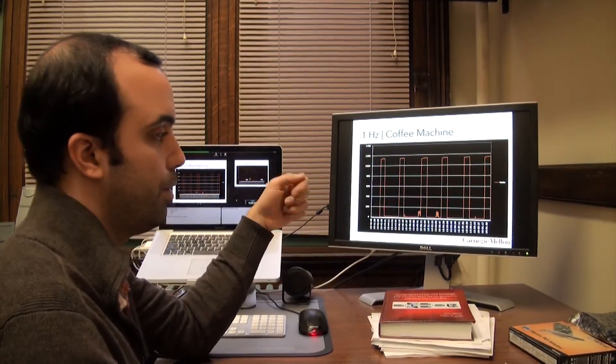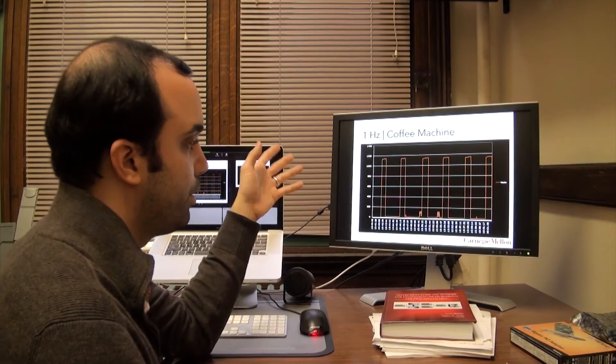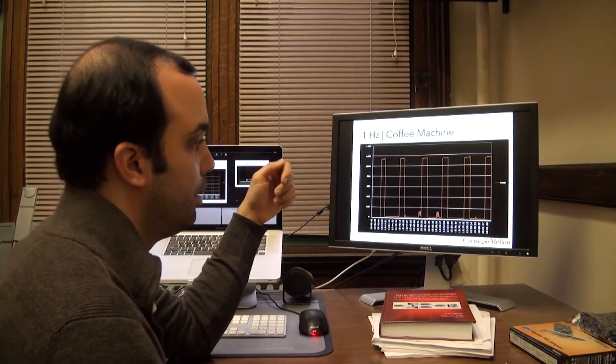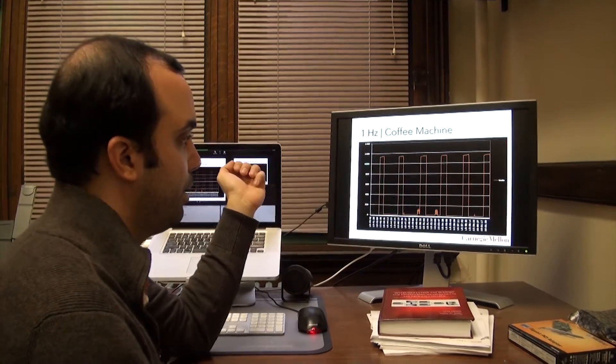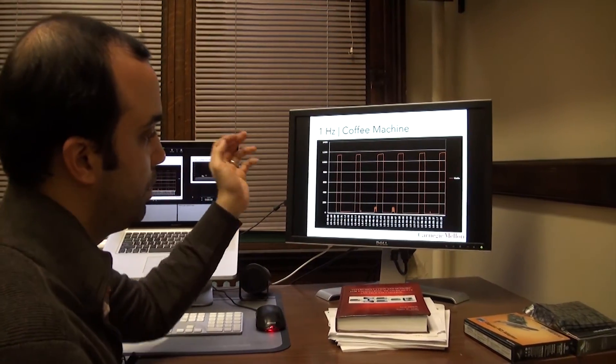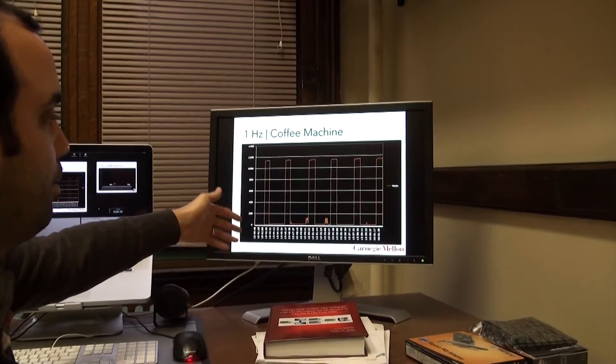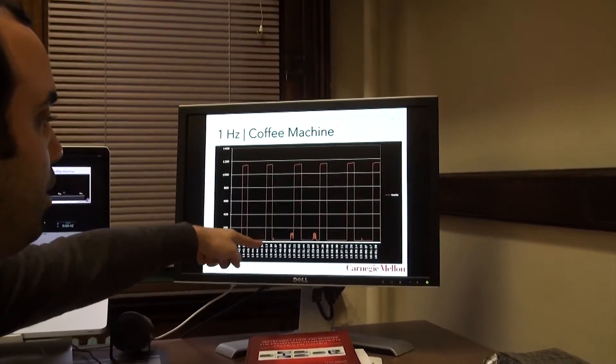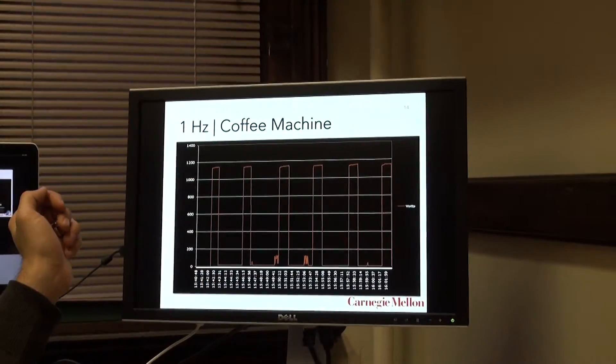So this coffee machine is one of those where you put in quarters and it gives you coffee, tea or mocha, depending on what you select. And what you can see from this graph is that we're able to detect when the heater is keeping the water hot. This is what happens in these patterns. This is just the heating element keeping the water hot.